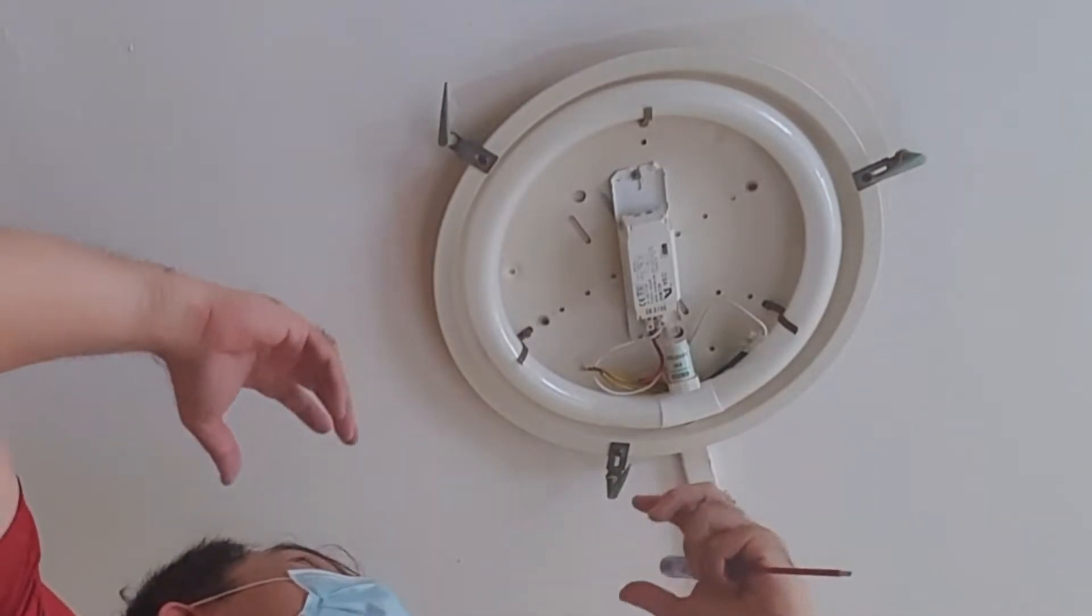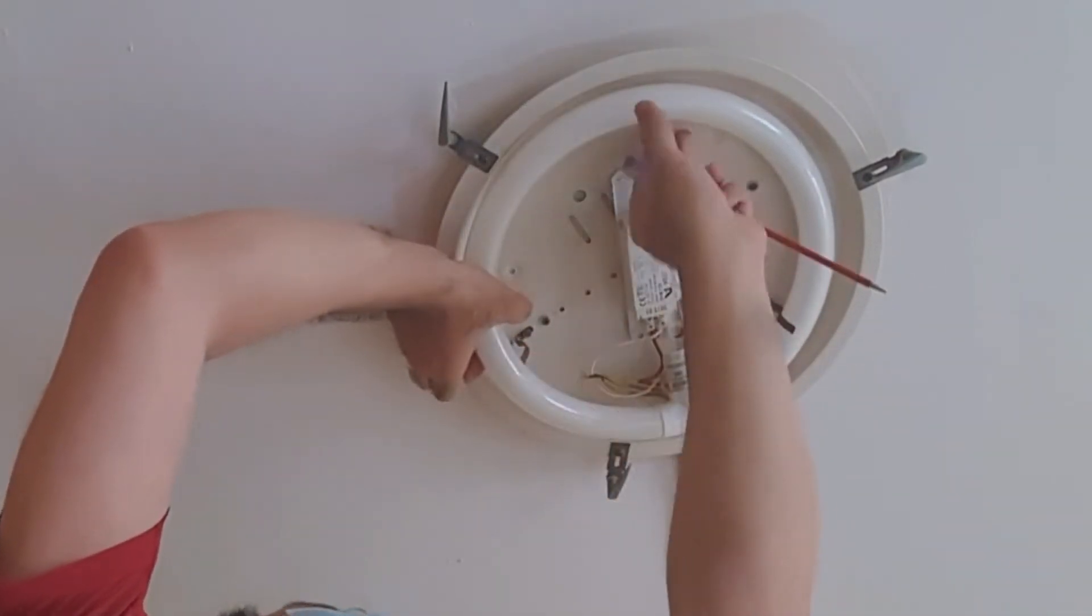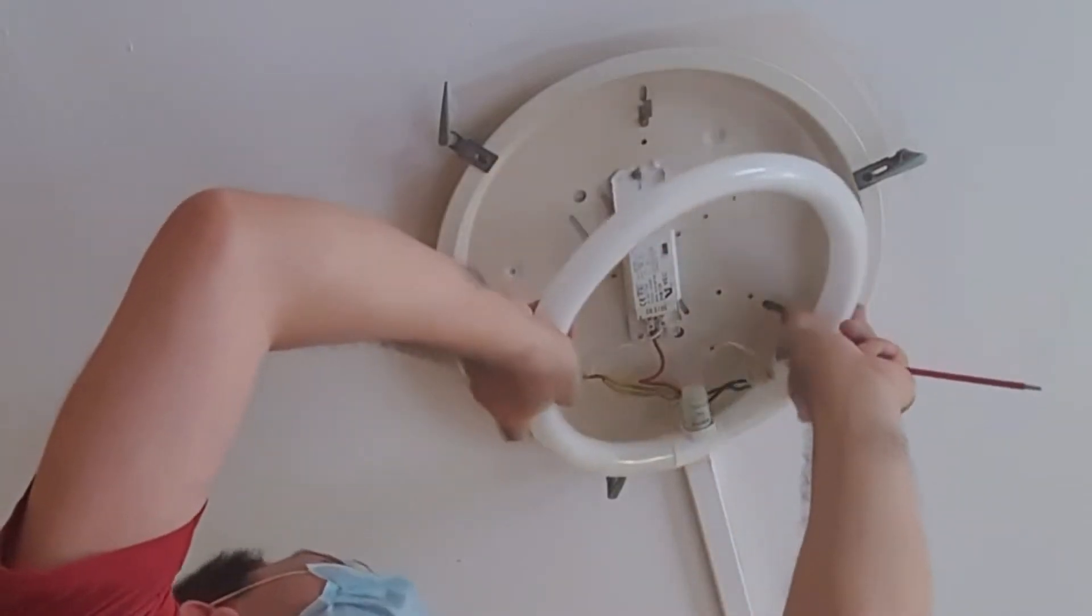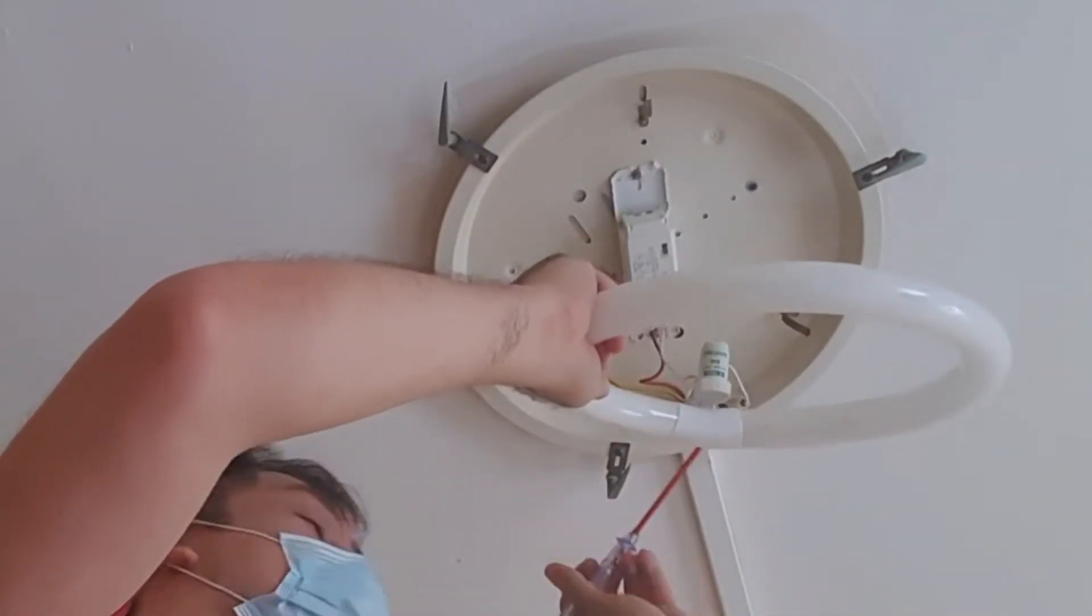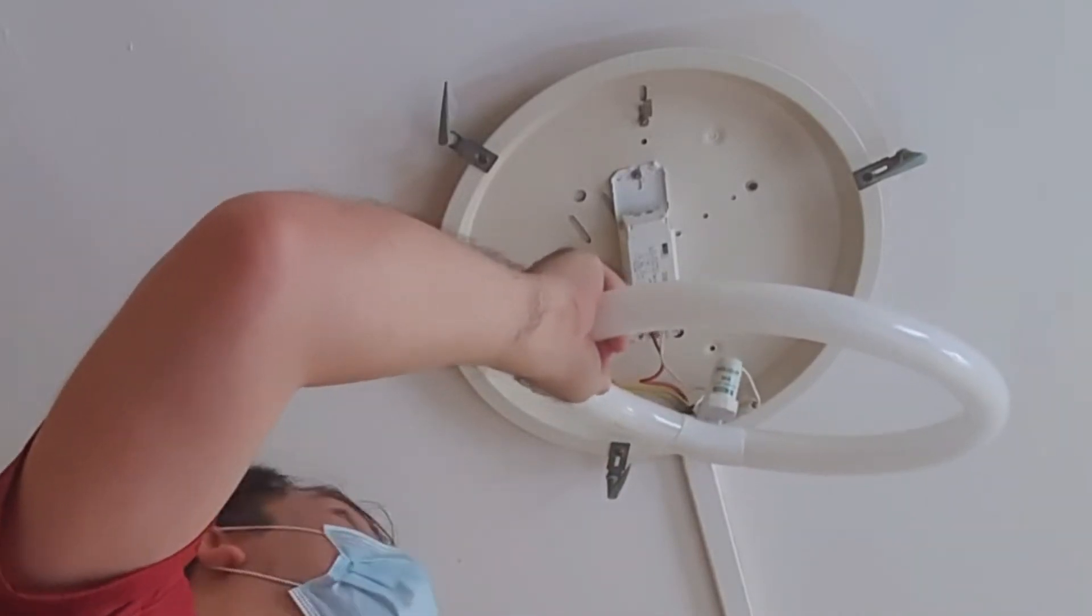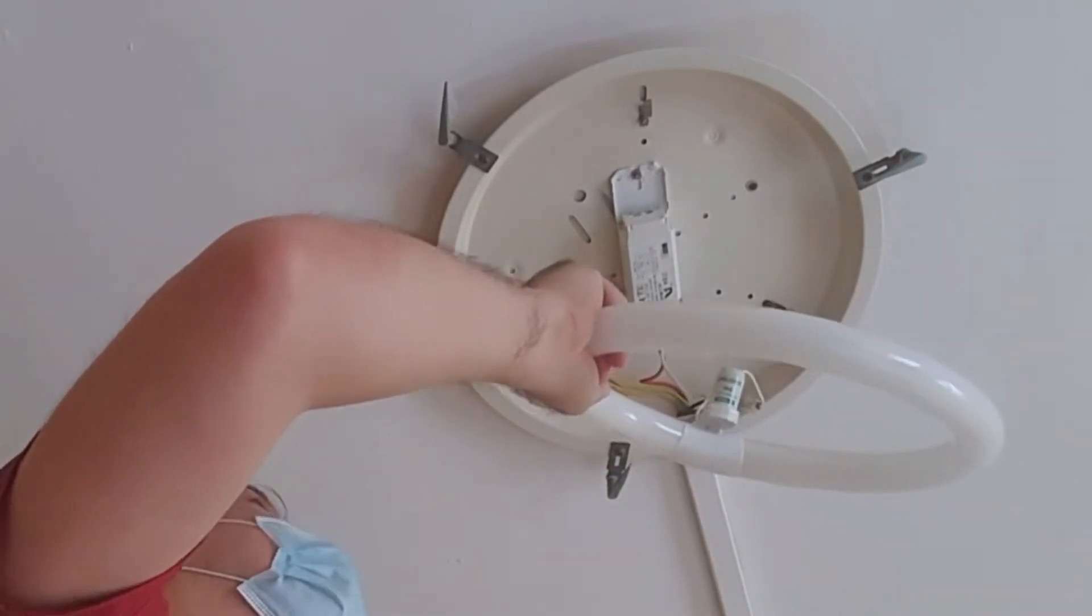We'll go ahead and start taking it apart. Let's take off the bulb. The bulb is connected to the ballast. I don't need that so I'm going to cut out the ballast.